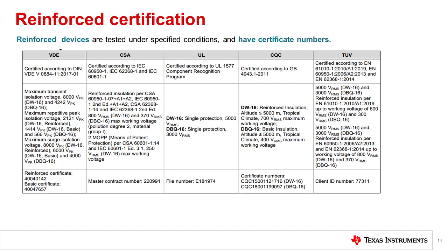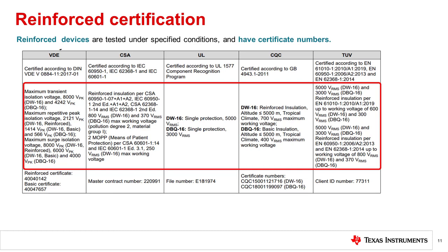Are all 5 kV isolators reinforced isolators? While most reinforced digital isolators have a rating of 5 kV or higher, isolators can be rated for 5 kV isolation protection and not necessarily be reinforced isolators. In order to achieve a reinforced rating, isolators must pass the surge test at 10 kV and must also maintain package creepage and clearance requirements, conditions for repetitive peak voltage, climate, and material and pollution groups. All conditions of test must be met in order to achieve the VDE certification.